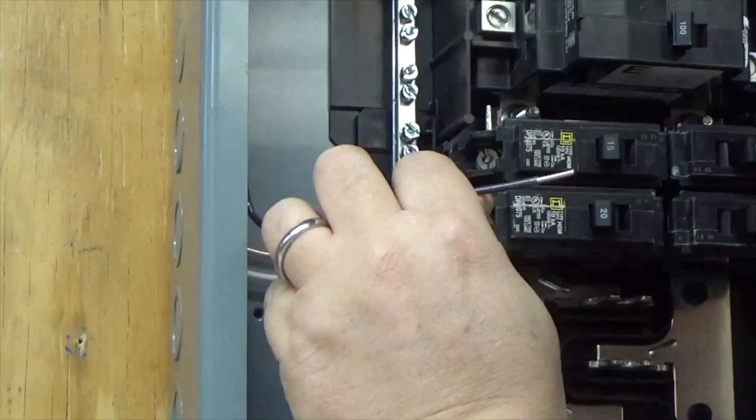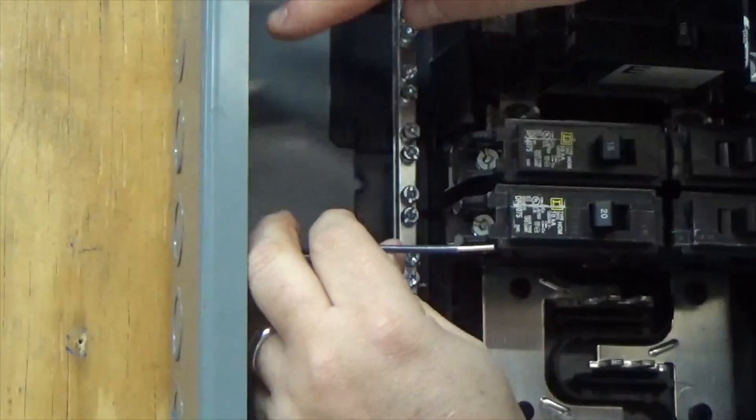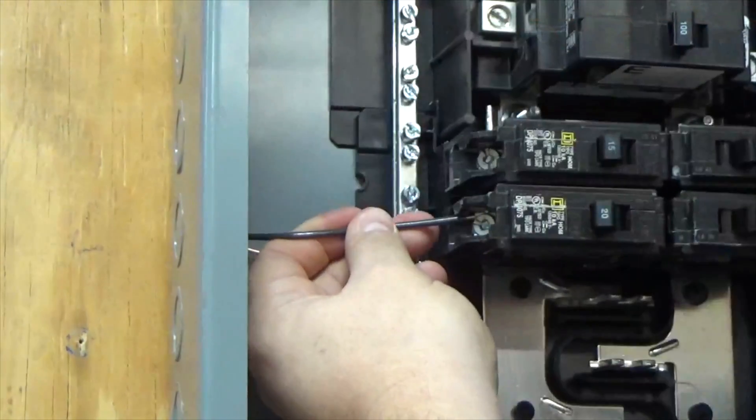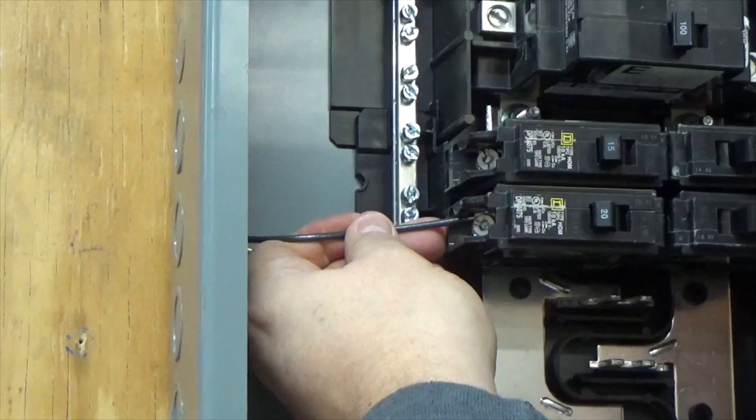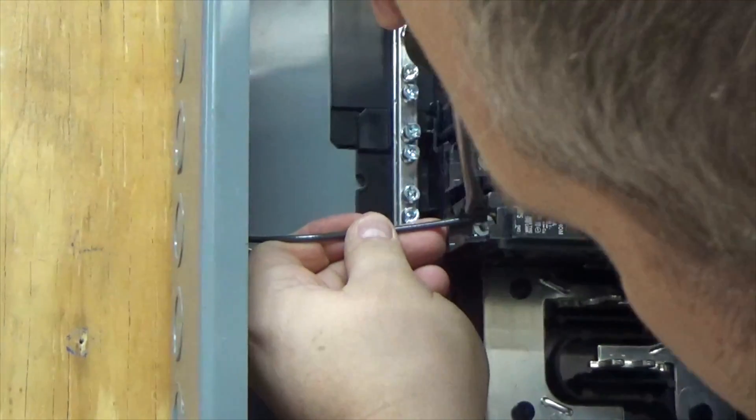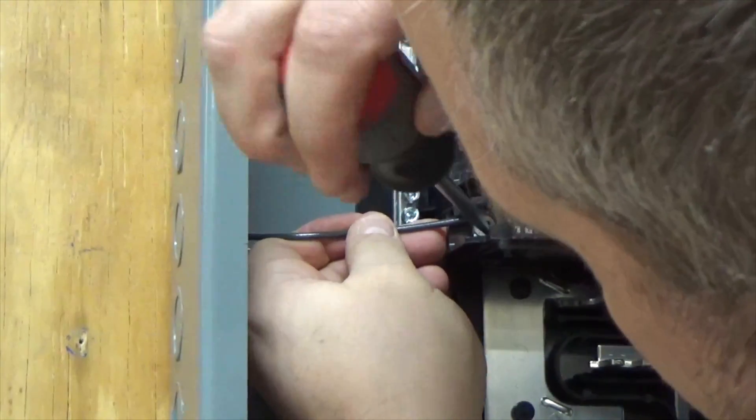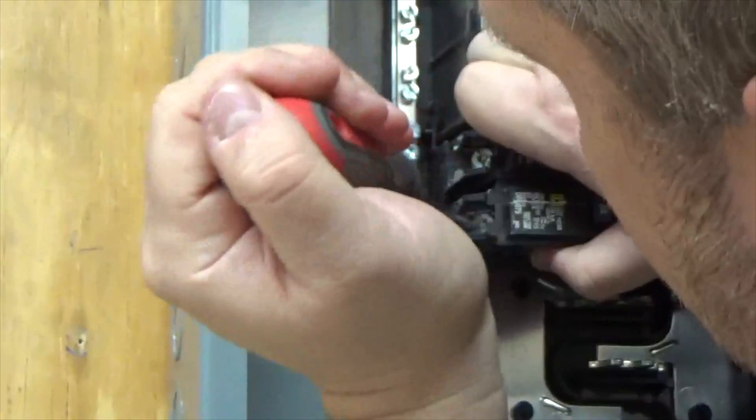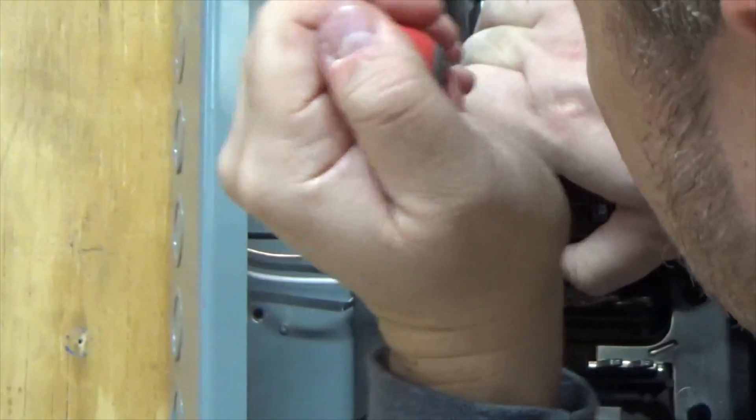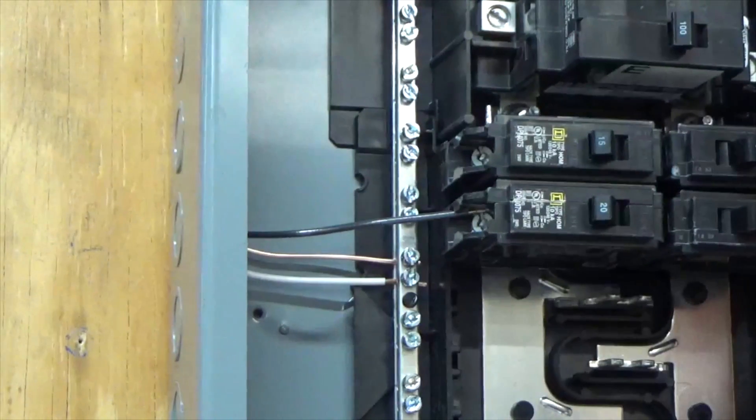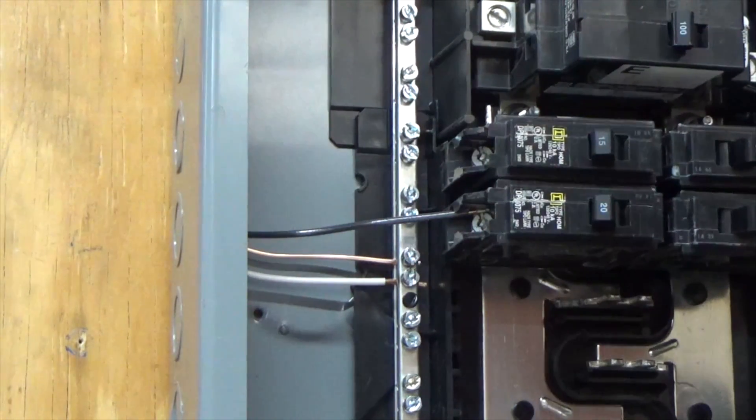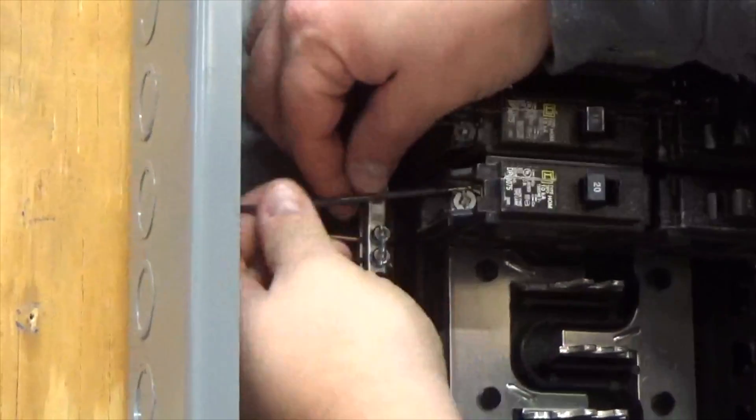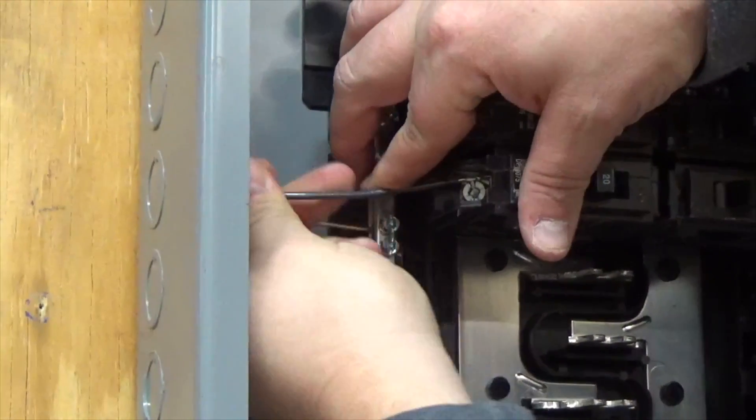I'm going to strip it about a half inch. Then what I'm going to do is bend the wire back and land it under the screw. Once you do that, you're going to want to make sure that you straighten out your wire and neaten it up a little bit.